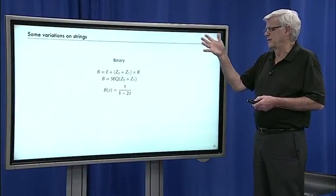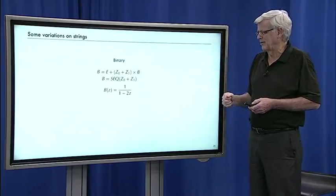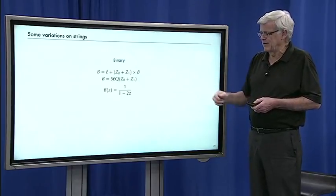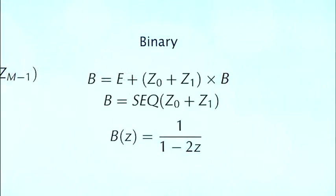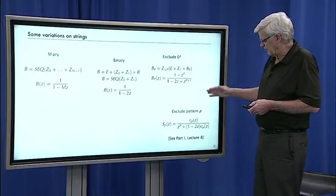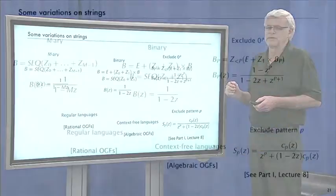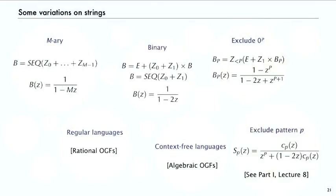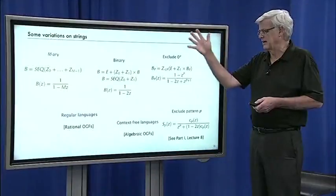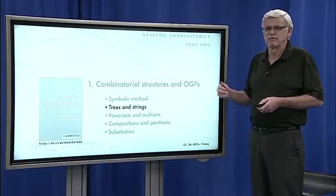And again, start with the basic binary string. There's actually two ways to write down a construction for a binary string. You could also say it's just a sequence of zero-one bits. Either way, you get to the same generating function. Or you could say M-ary, so M different letters. Or the example I did, exclude strings of zeros. Or exclude a particular pattern. And we talked about that in detail in part one, lecture eight. And again, regular languages or context-free languages. Starting with the most elementary construction, but then using the operations in natural ways, we can study a broad galaxy of combinatorial structures. That's an introduction to the use of symbolic method for basic structures, trees and strings.